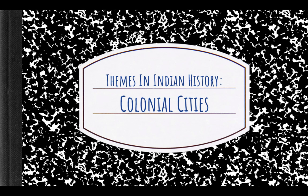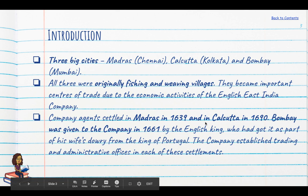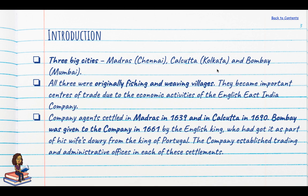In this chapter we're going to be studying about the three big cities of the colonial period: Madras, Calcutta and Bombay. Originally all three were fishing or weaving villages, but they became important centres of trade due to the economic activities of the English East India Company.